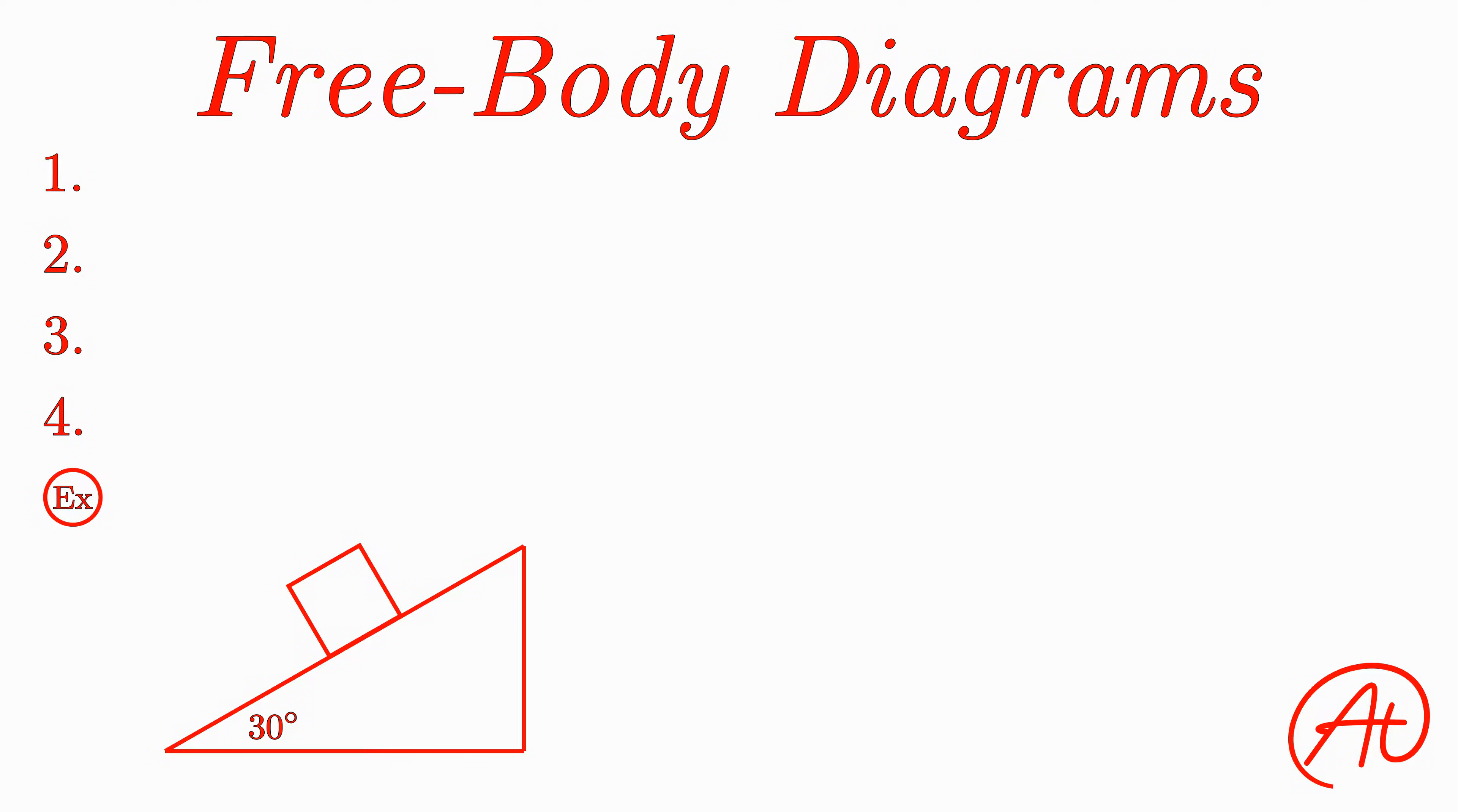Alright, your first step is to draw a simplified version of your object of interest as a free body, which basically means you want to draw your object without any of the other surfaces, objects, or other forces that might be interacting with it. So let's just draw our object as a simple square without the ramp.